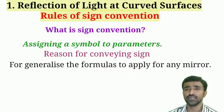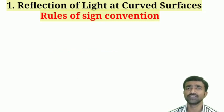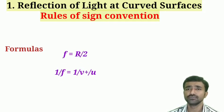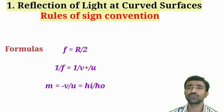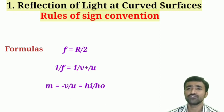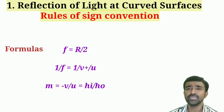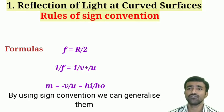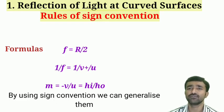We have different formulas: the relation between focal length and radius of curvature f = R/2, the mirror formula 1/f = 1/v + 1/u, and the magnification formula m = -v/u or m = hi/h0. For any mirror in any situation, you need to use these generalized formulas. With signs, we can generalize these formulas for any situation.